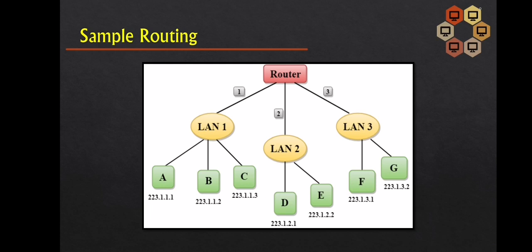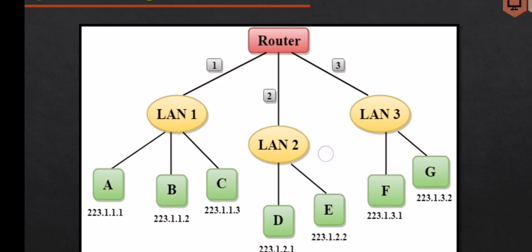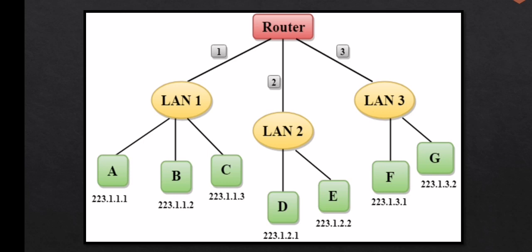We now go to sample routing. In the diagram, a router has three interfaces labeled 1, 2, and 3, or LAN 1, LAN 2, and LAN 3, and each router interface has its own IP address. All interfaces connected to LAN 1 have an IP address in the form of 223.1.1 and so on, while those connected to LAN 2 and 3 have IP addresses in the form of 223.1.2 and 223.1.3 respectively.